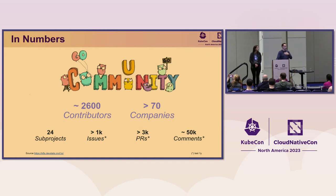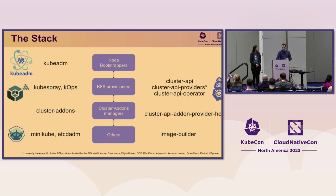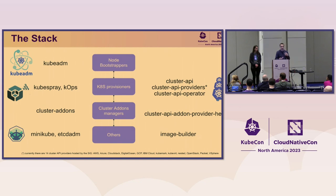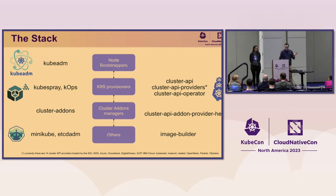Now the project is getting more mature every day. Here is kind of the stack — a very simplified view of what gets you to a Kubernetes cluster and what the SIG offers. The very basic foundation is kubeadm, and then the provisioner on top of it: there's CUPS and Cluster API as we mentioned. CAPI also has a lot of providers underneath.